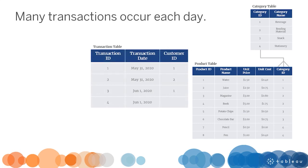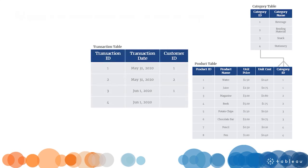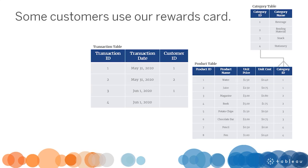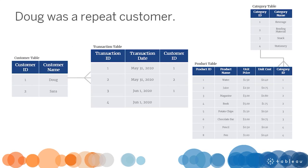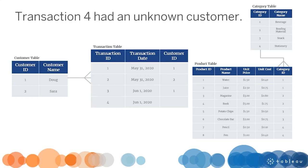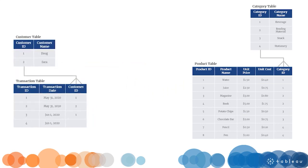Many transactions occur each day. Each transaction has a unique transaction ID. Some customers use our reward card system during a transaction, providing us with a partial list of customers. Doug was a repeat customer in transactions one and three. Transaction four had an unknown customer. There is a one-to-many relationship between the customer table and the transaction table. The two tables relate based on a common field, customer ID.